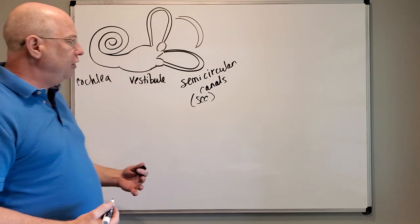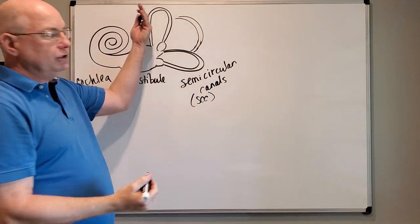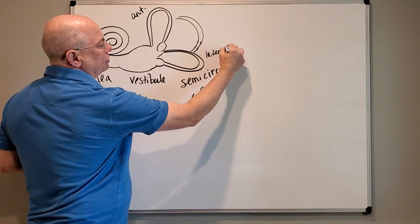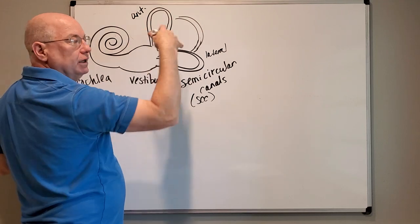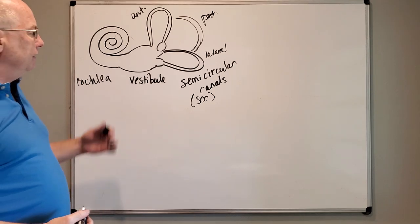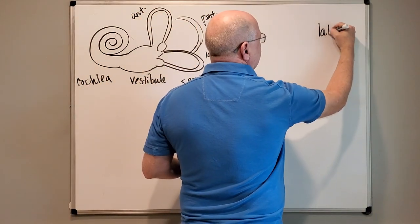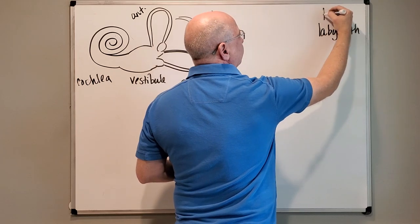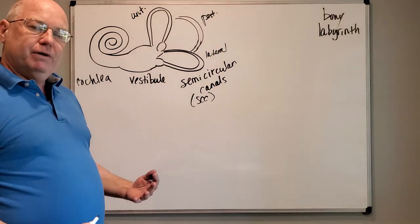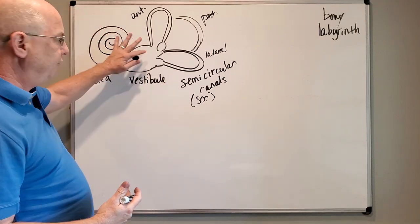Each semicircular canal gets a name. The one coming front to back is the anterior semicircular canal. The one lying on its side is the lateral semicircular canal, and the one you can see through when looking at the model is the posterior semicircular canal. The inner ear is this maze of bone called the bony labyrinth. Labyrinth means a maze. There's a bony labyrinth and a membranous labyrinth.